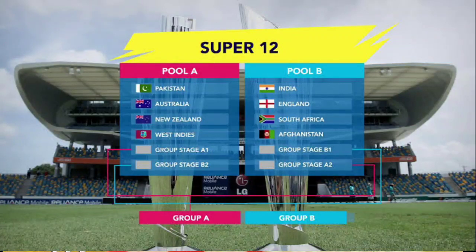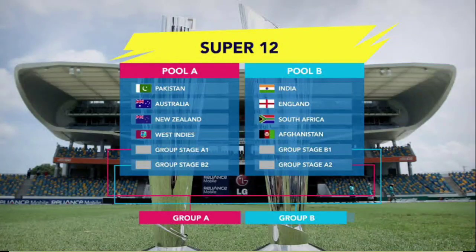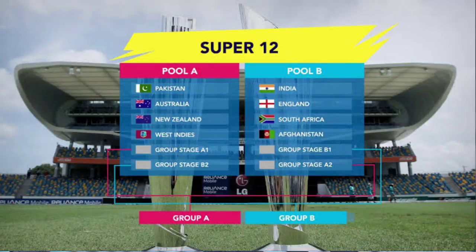In Group B, you can see England, India, South Africa, and Afghanistan. The number one team from Group B will also advance from here.